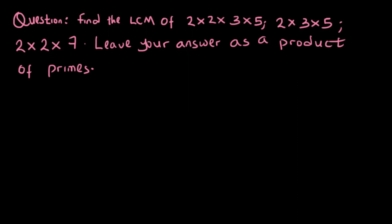In this video I intend to cover a part of LCM that I did not touch in the previous video. We've got this question: find the LCM of 2×2×3×5, 2×3×5, and 2×2×7. Leave your answer as a product of primes.